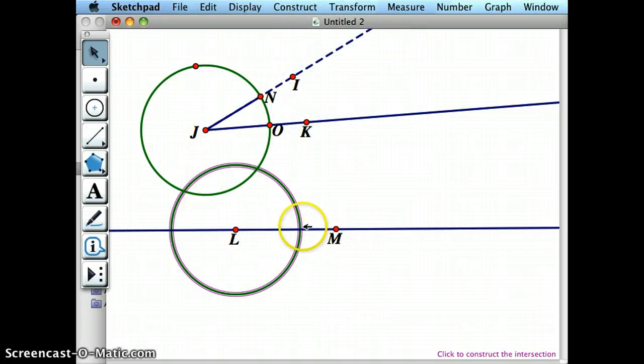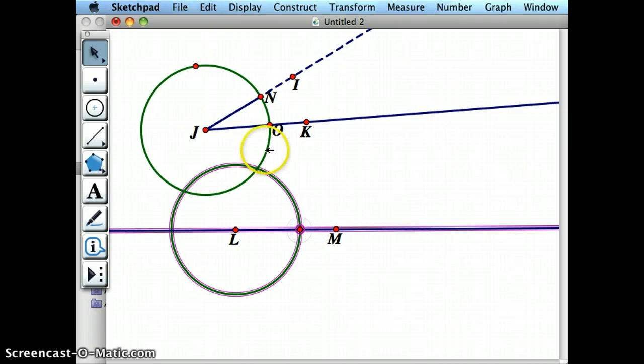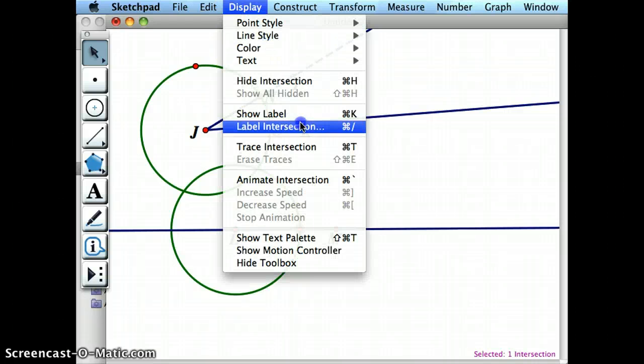Now this intersection point here is going to be the same as point O. So I'm going to show that.